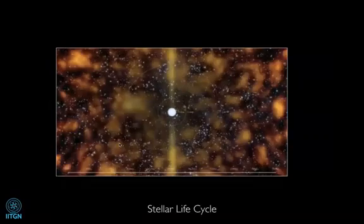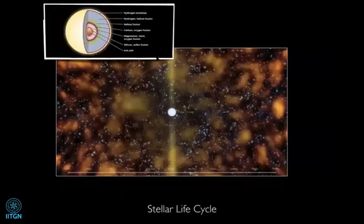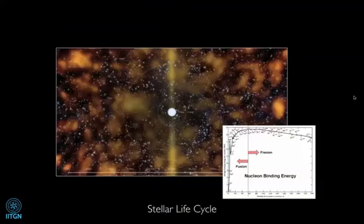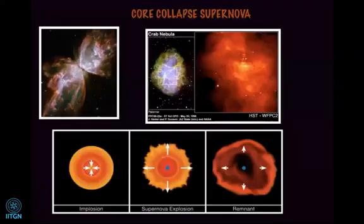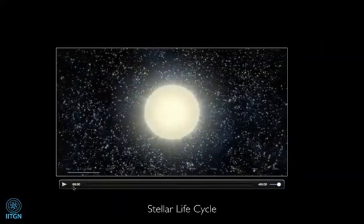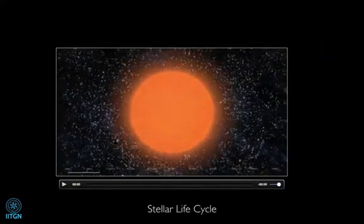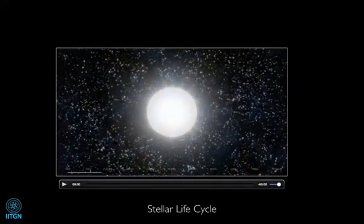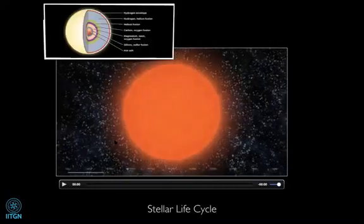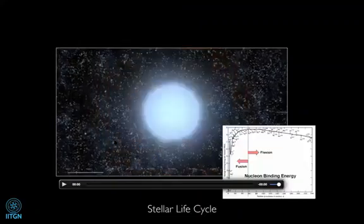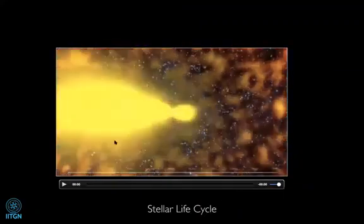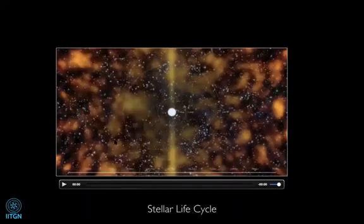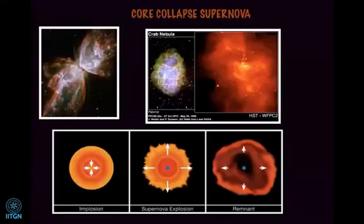But once iron is formed in the core, what happens is that you can see here in the inset, iron has the highest binding energy possible. And therefore what happens is burning iron cannot produce any more energy. So here fusion stops, and therefore what happens is there is a collapse of the outer layers forming, then ultimately nuclear energies are reached at the core, and there is a bounce and throwing out these outer layers into space. This is something which is called a core collapse supernova explosion.